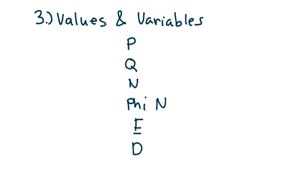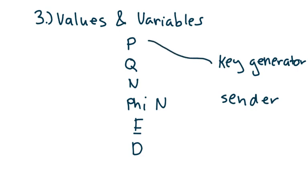You'll also hear me refer to two hypothetical people called the key generator and the sender. The key generator is the one who's going to generate the values for all six of these variables. And the sender is going to be the one who's going to select a message that he or she would like to send to the key generator and encrypt it. Then, after the sender has encrypted their message and sent it to the key generator, it'll be the key generator's job to decrypt this message.